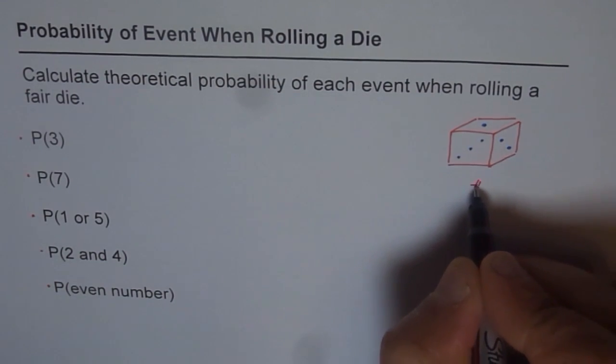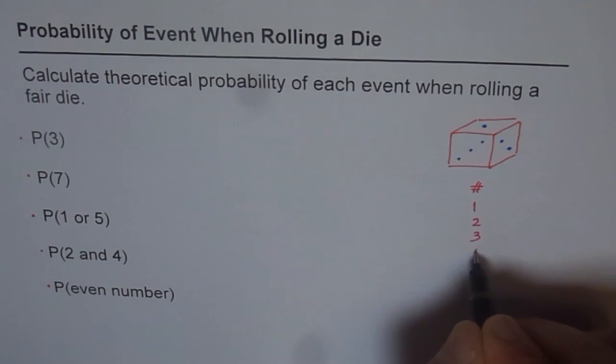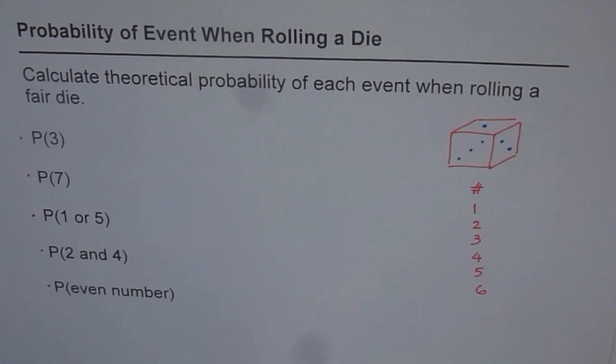So the possible events are, you could get numbers, which could be 1, 1 dot that means, or you could get 2, or 3, 4, 5, or 6. So these are different possibilities.